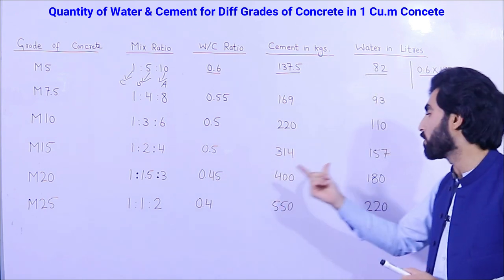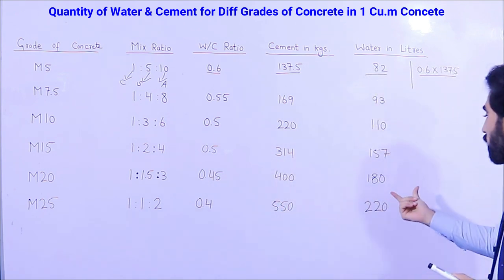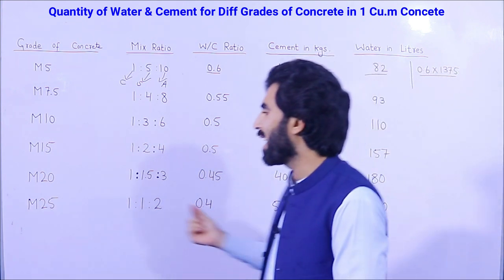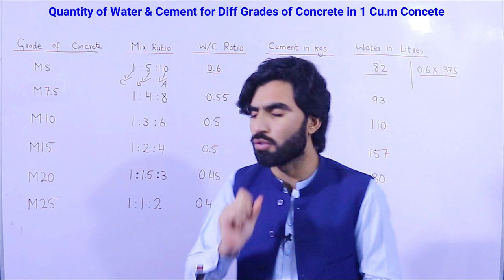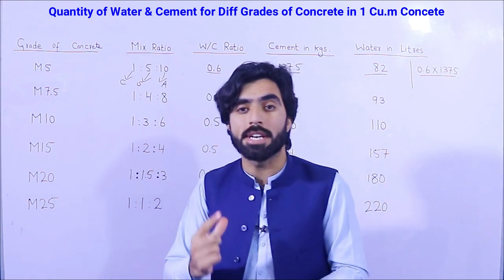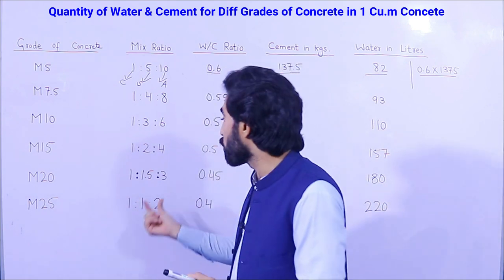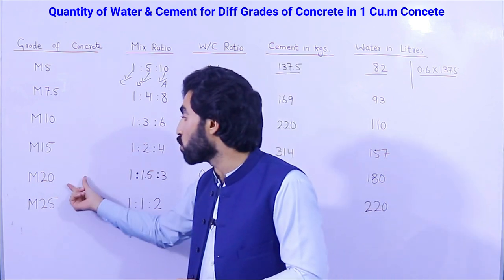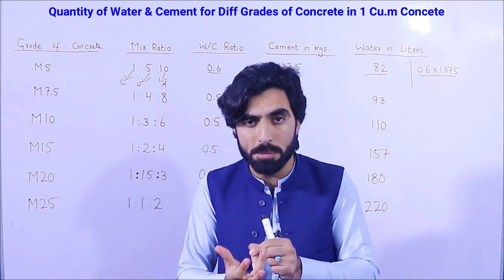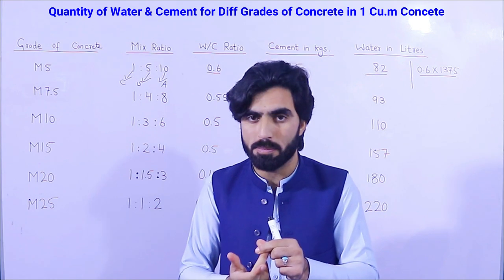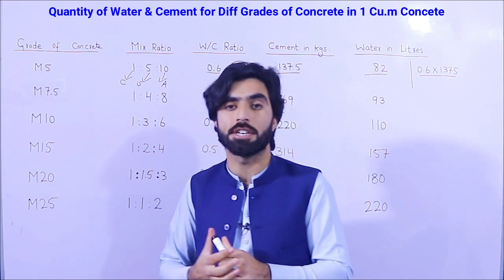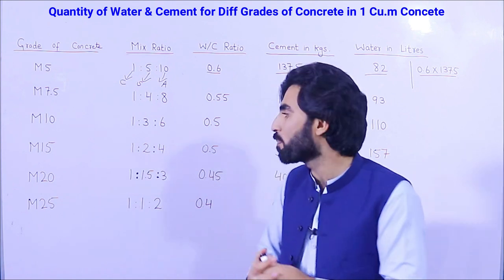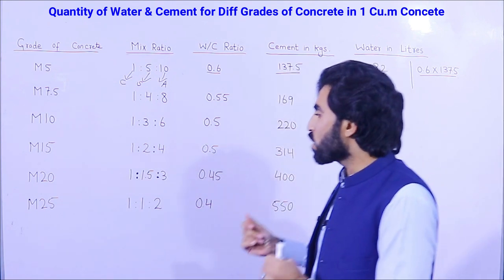For M20 grade concrete, the mix ratio is 1:1.5:3 and the water-cement ratio is 0.45. You will require 400 kg of cement and 180 liters of water per cubic meter. Remember: M20 grade concrete should be used as the minimum grade for beams, columns, and slabs.